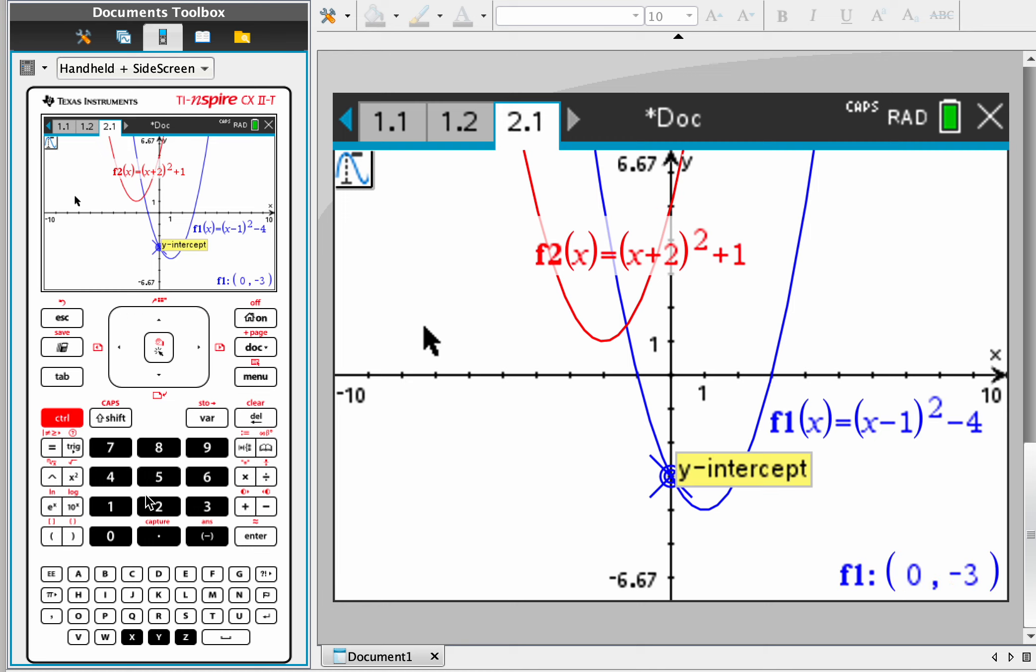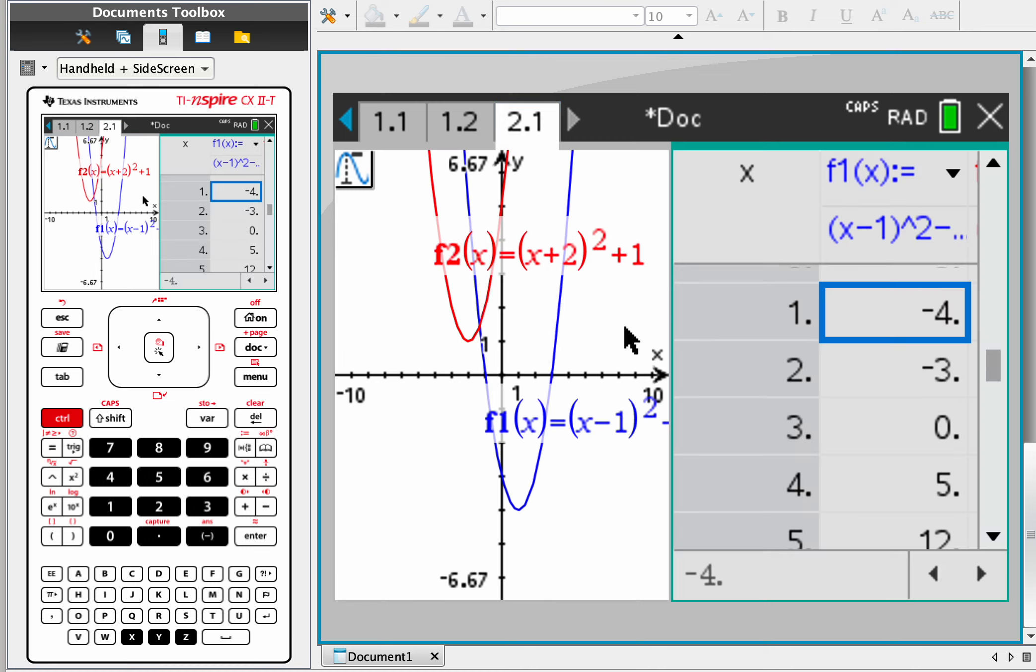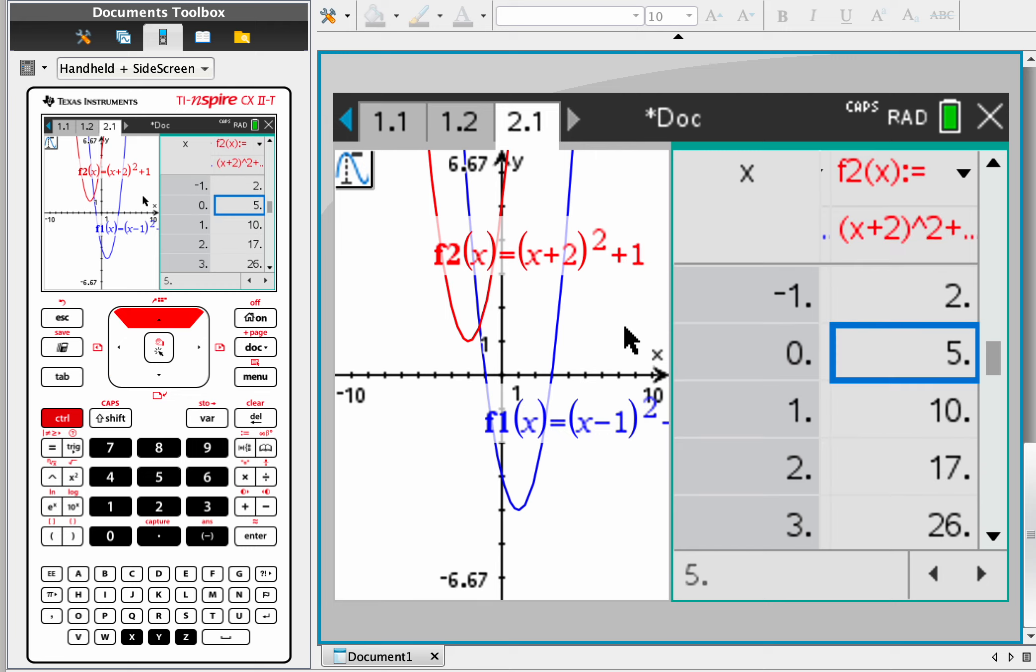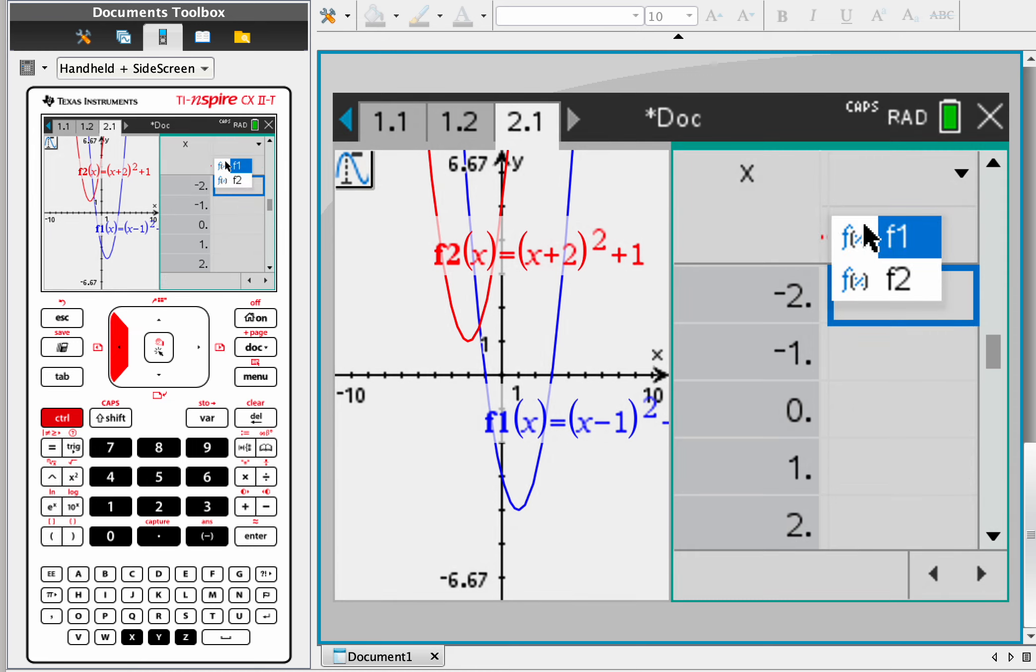Another way, just remember, control T will take you to the table, and you can see where is x equal to 0? We're right there, so there's one y intercept, and you can look for the other one. Both of them are here. It's not the easiest to navigate here, but if you play around with it, it should be clear.